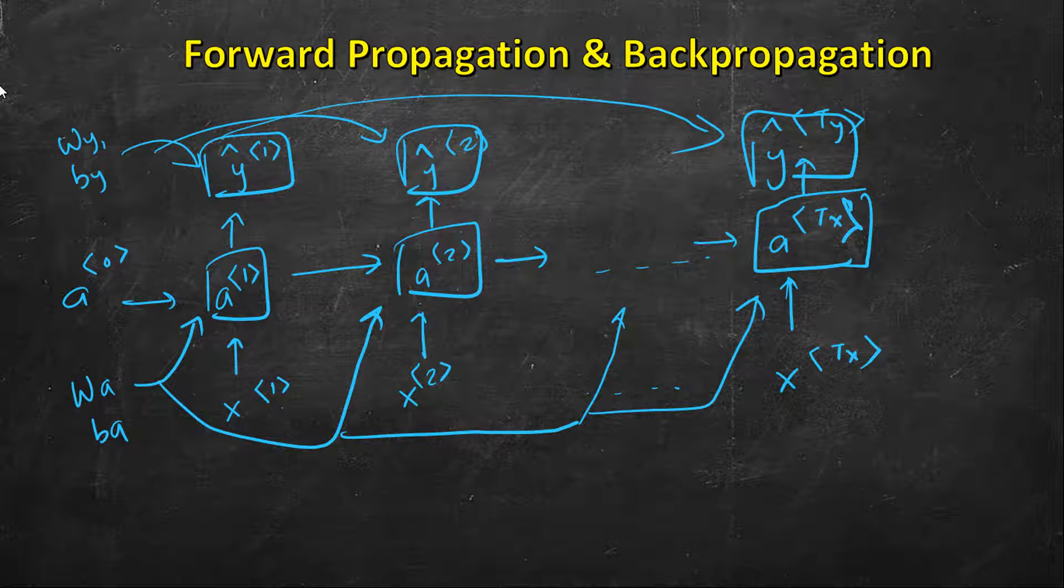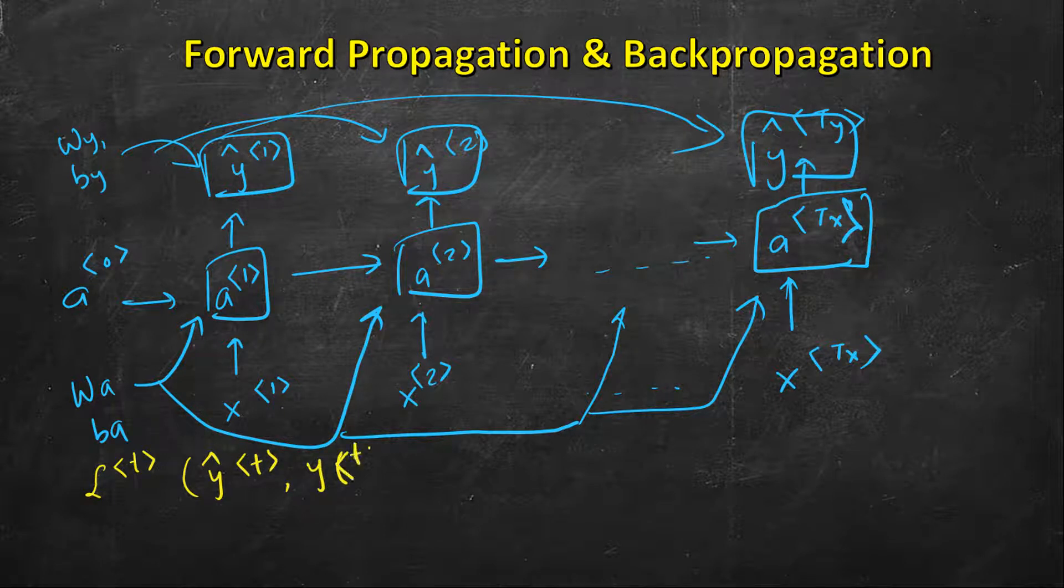For backpropagation, we need a notion of loss function. We will define an element-wise loss function, let's call it L_t, between the calculated y_hat_t and the expected y_t. Which loss function we use is irrelevant for understanding the concepts. Let's take a loss function which is, say, the square of difference between these two values, expected and actual.